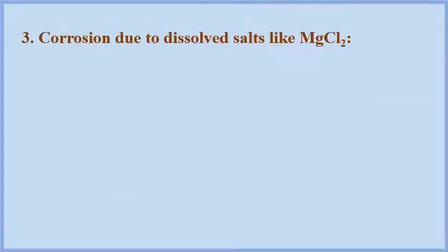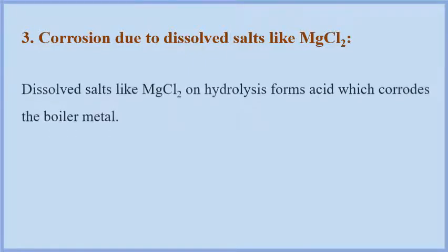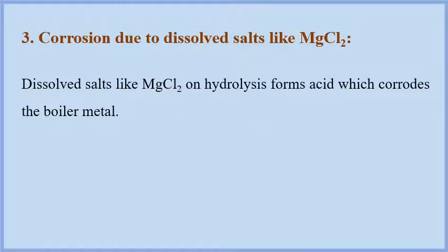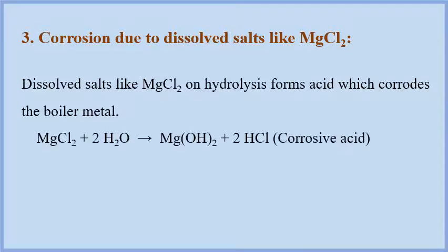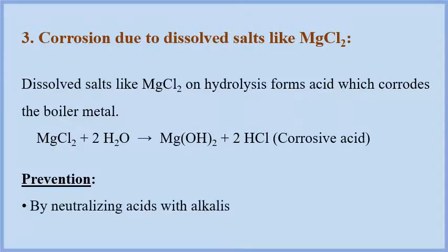Another reason for boiler corrosion is due to dissolved salts like magnesium chloride. Magnesium chloride present in water on hydrolysis forms magnesium hydroxide along with hydrochloric acid. This acid is corrosive in nature and enhances boiler corrosion. This type of corrosion can be prevented by neutralizing HCl with a base like ammonium hydroxide.